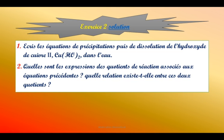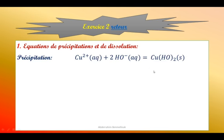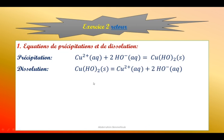Exercice 2 : écrire les équations de précipitation puis de dissolution de l'hydroxyde de cuivre 2, Cu(OH)₂, dans l'eau. On a la réaction de précipitation, c'est l'inverse de la réaction de dissolution. Les ions s'assemblent pour former un solide. Et la dissolution, c'est l'inverse : un solide ionique se décompose en des cations et des anions.